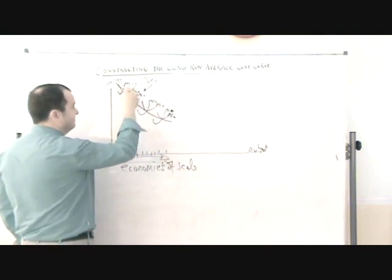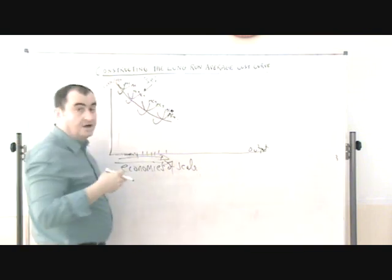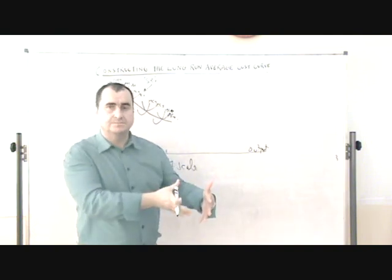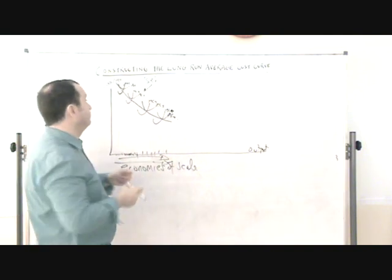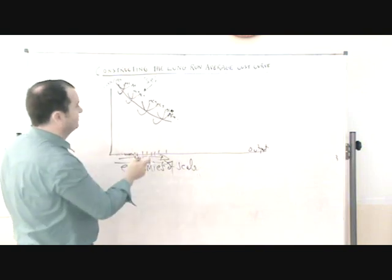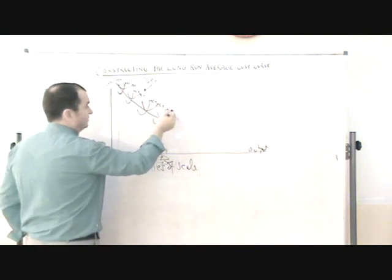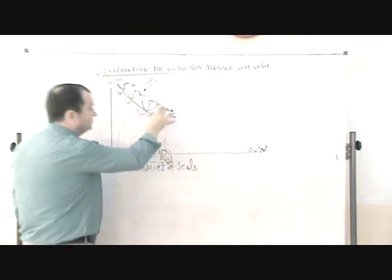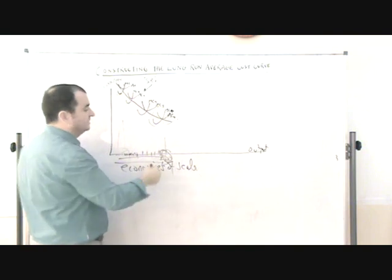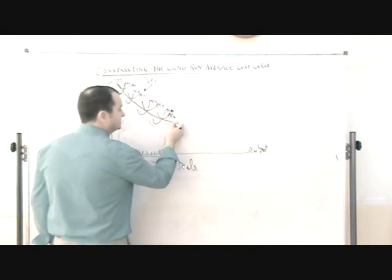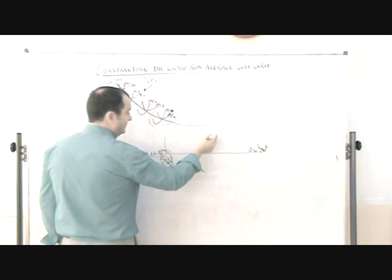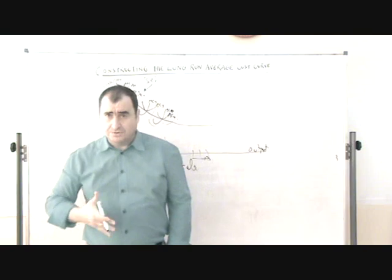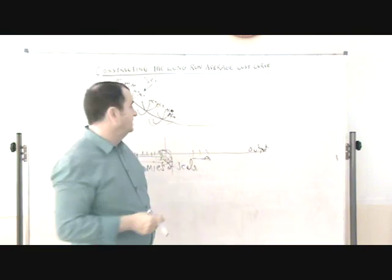So the cost curves they face within a short run all feature the problem of diminishing returns, which forces them to jump to the next short run period. But as we compare those short run periods, those with larger output levels have lower average costs because of the economies of scale. So this continues to occur and maybe it will level out at very large levels of output because there comes a point when there are no more economies of scale to be achieved.